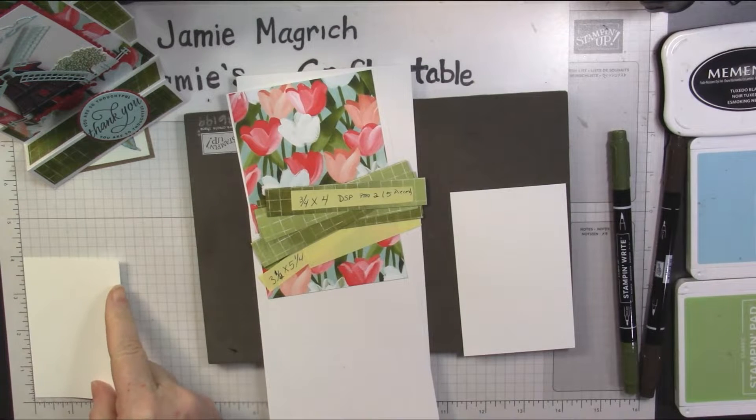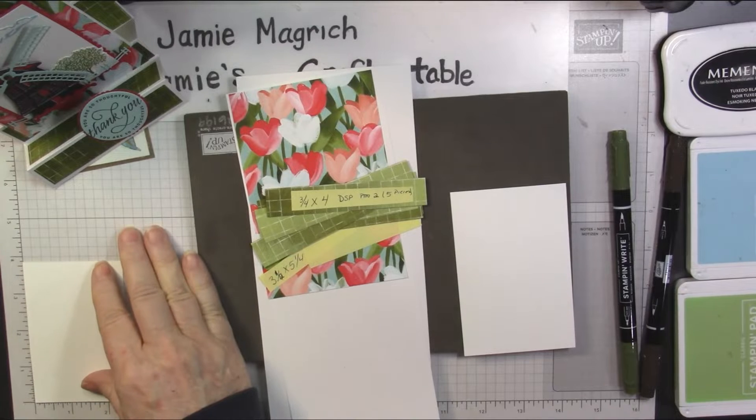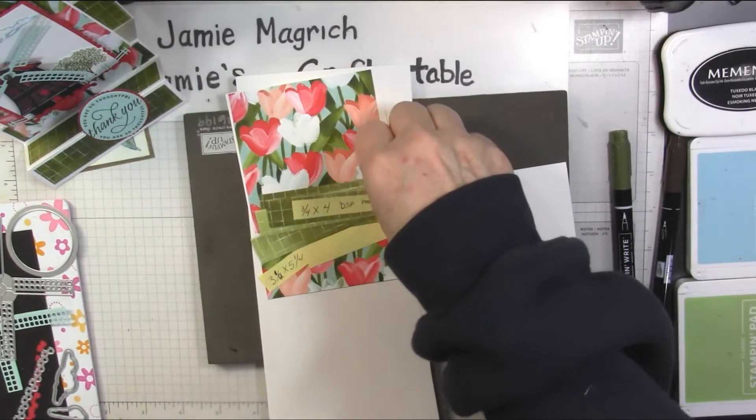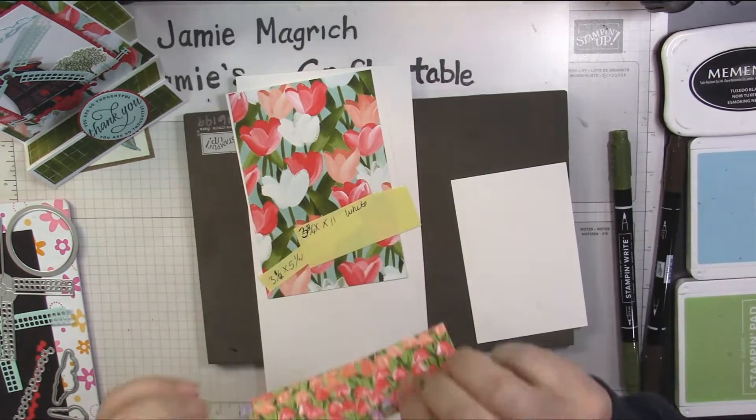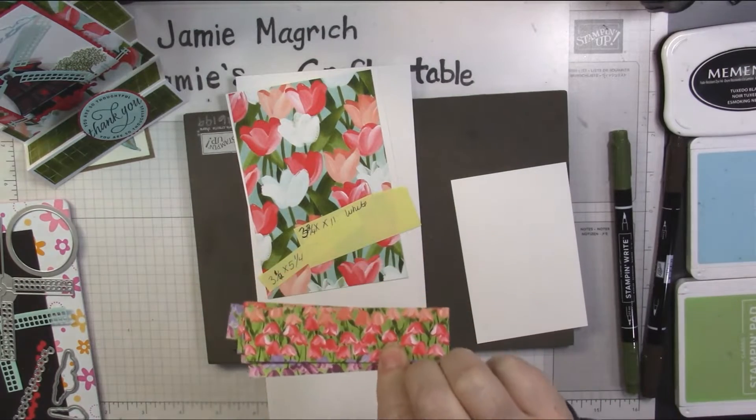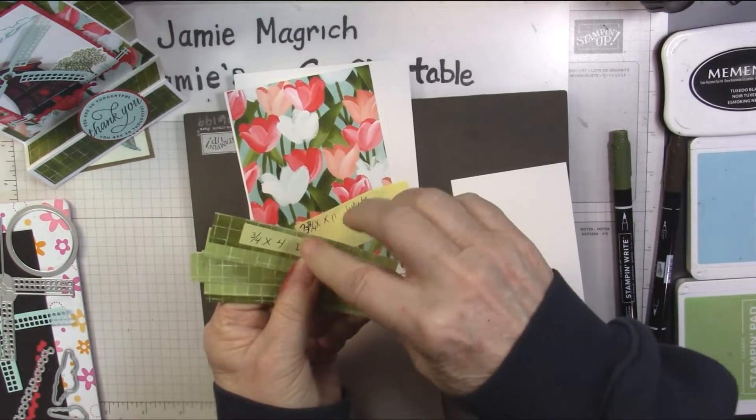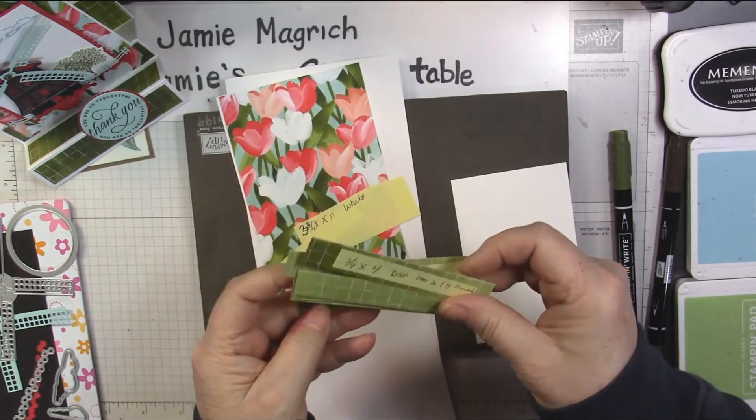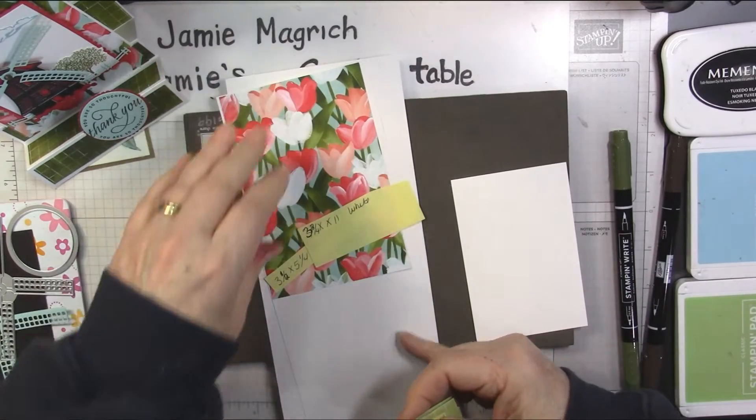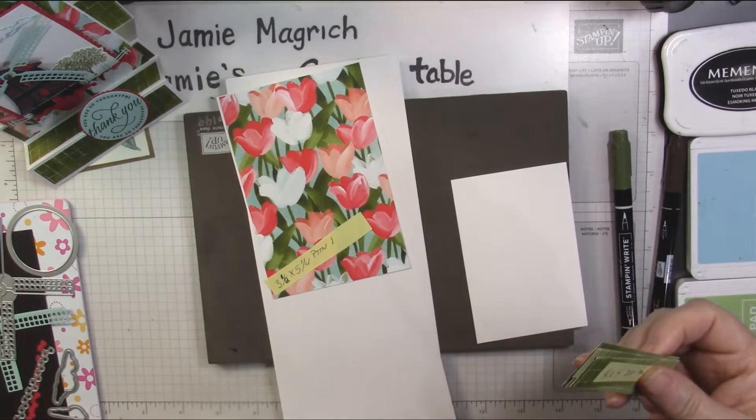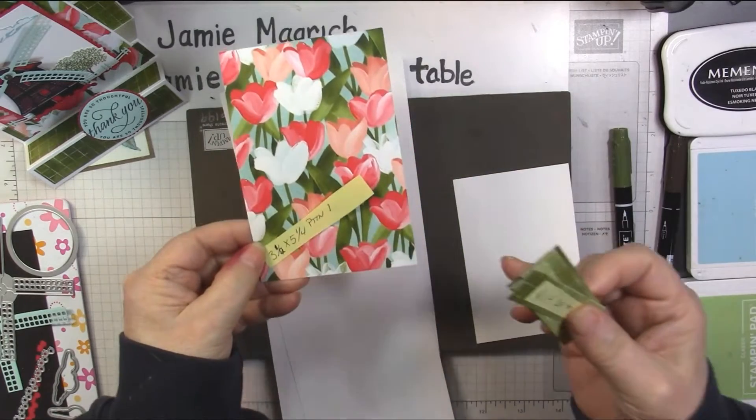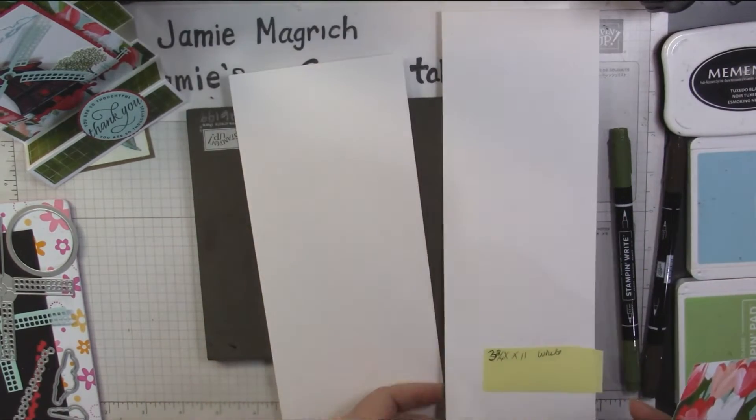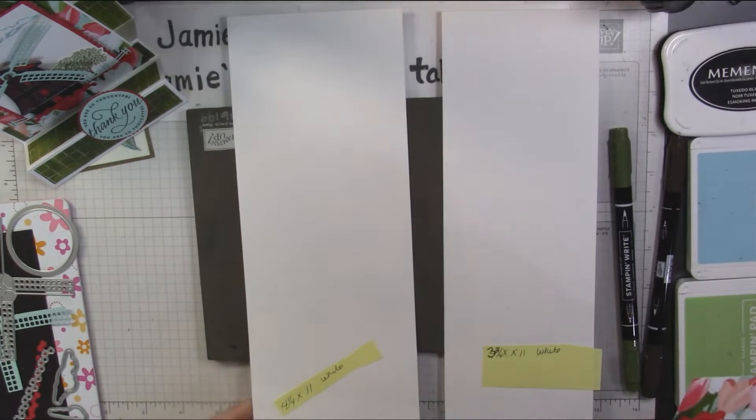This one is three and seven eighths by two and five eighths. I have three quarter by four inch piece of designer series paper and this is the Flower and Fields DSP. There's five pieces that are three quarter by four inches, one that is one by four inches. And then I have another piece of that same DSP which is three and a half by five and a half. This is three and three quarters by eleven, and this is four and a quarter by eleven.